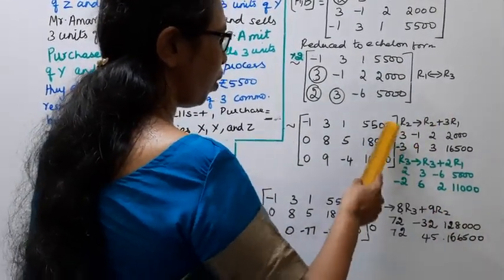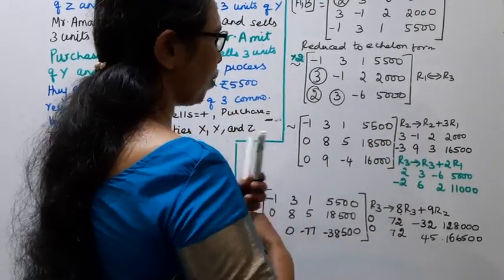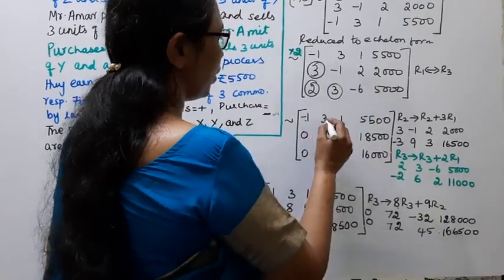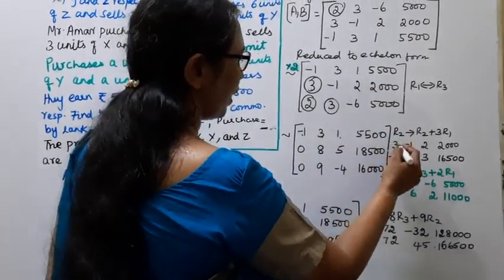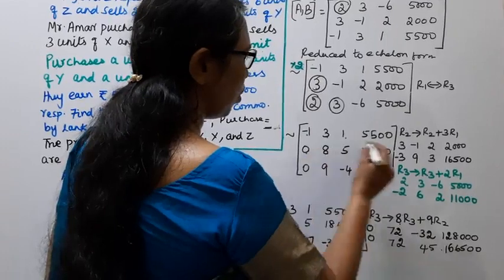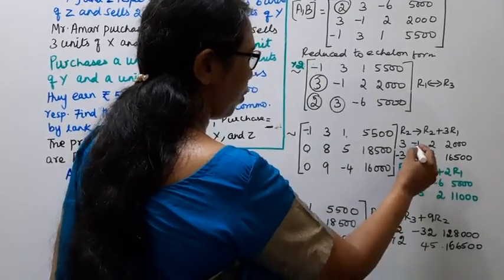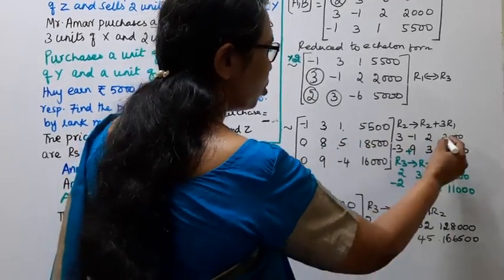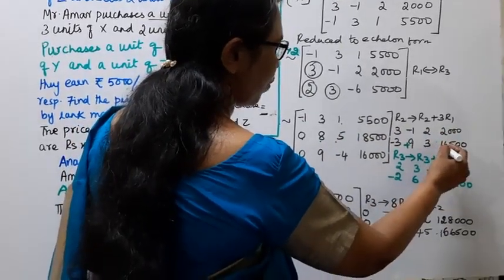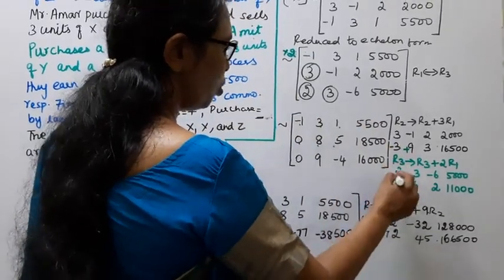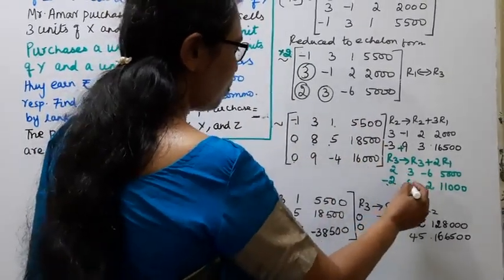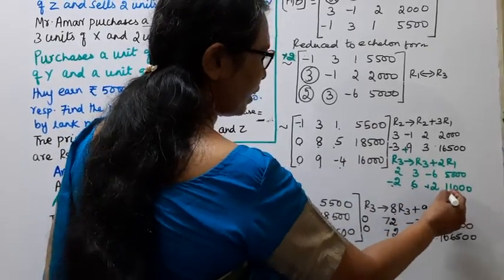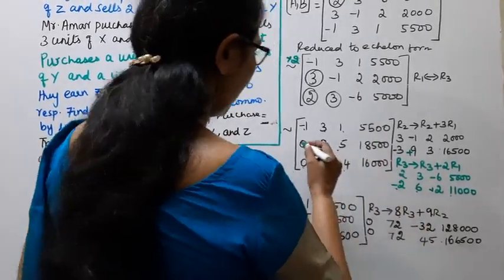After adding, the updated matrix rows are: R1 = [-1, 3, 1 | 5500], R2 = [0, 8, 5 | 18,500], R3 = [0, 9, -4 | 16,000]. We now perform further row operations to eliminate the leading term of R3.